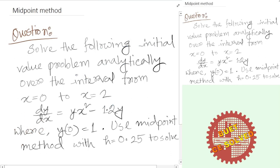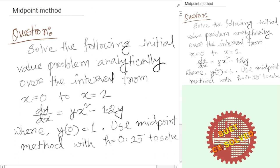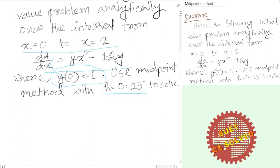Hello, welcome. Midpoint method. I'm back. We have a question here: solve the following initial value problem analytically over the interval from x equals 0. Use the midpoint method with h equals 0.25 steps. We need to use this numerical method.